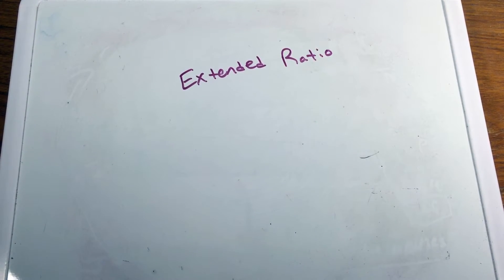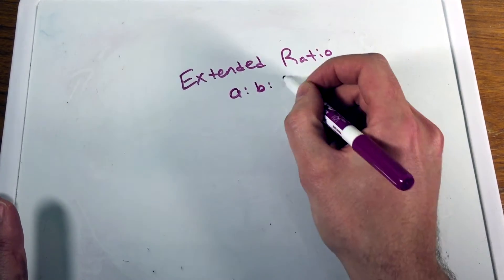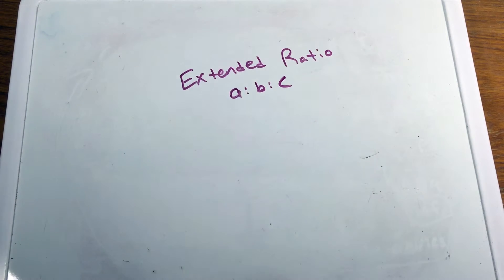An extended ratio is sometimes more than just two. So a lot of times we'll have A to B to C, and keep going. We've got D, E, F, G, et cetera. We have multiple different things that we can extend to our ratio.